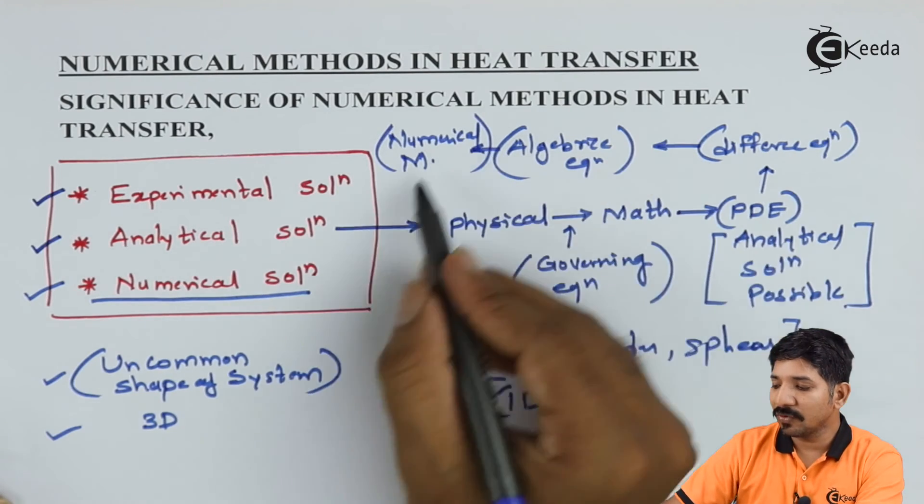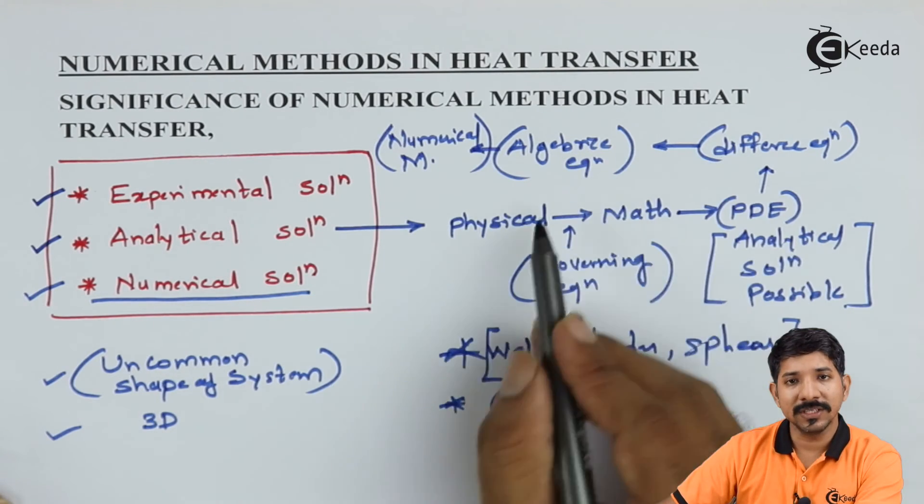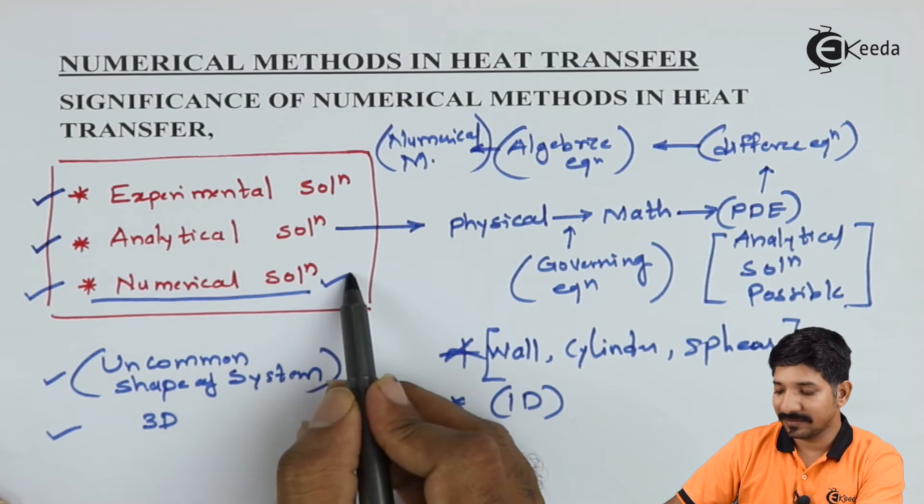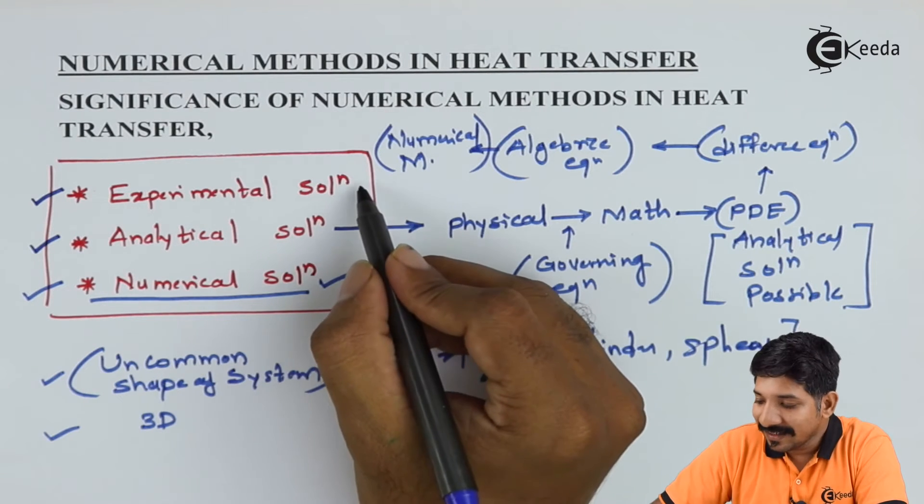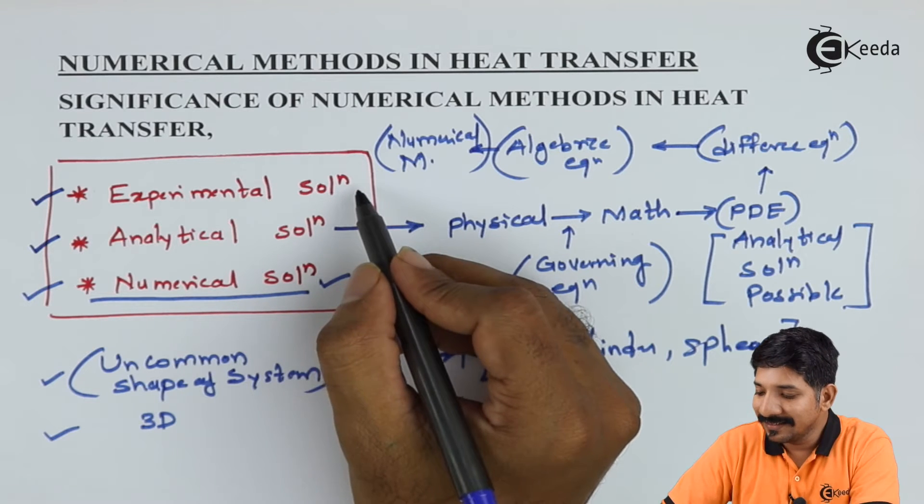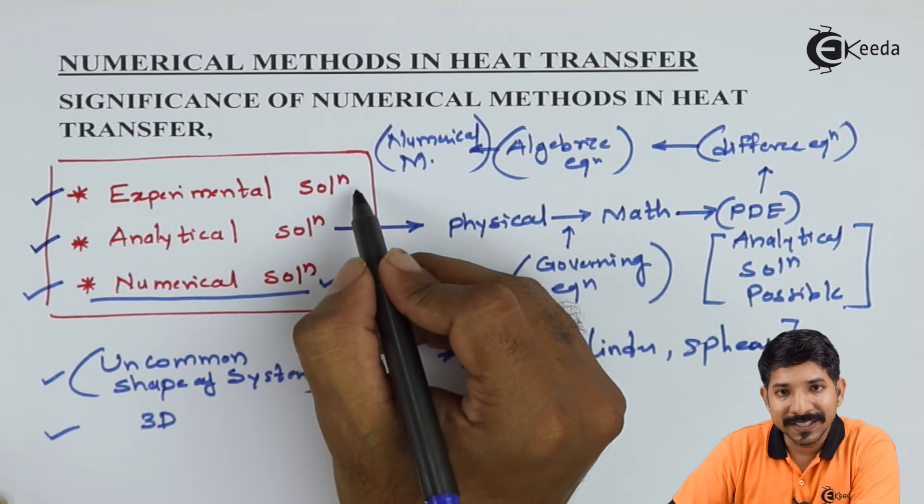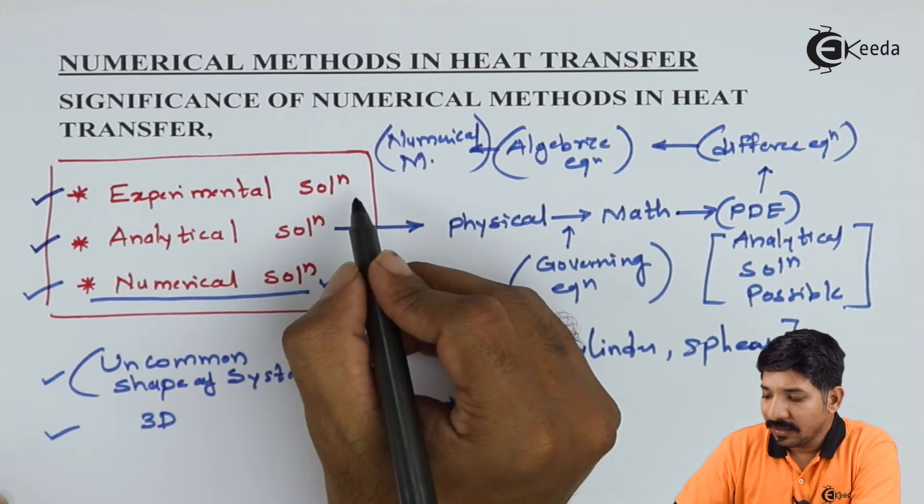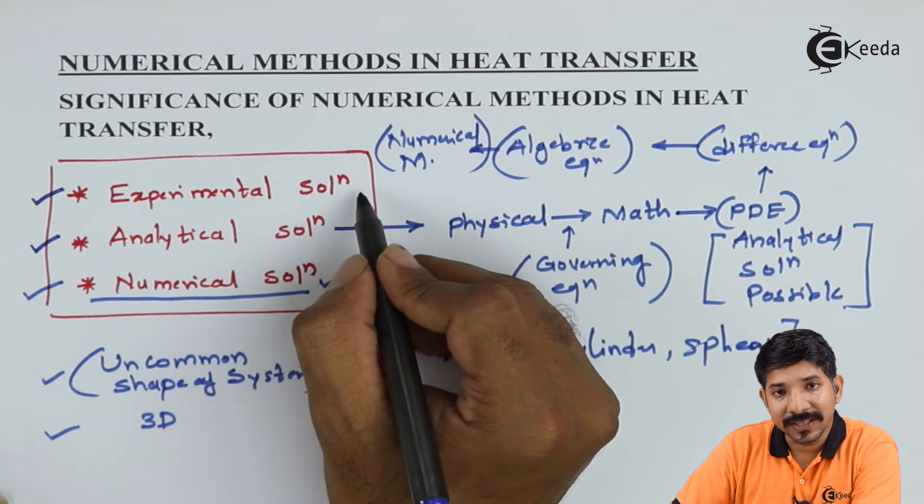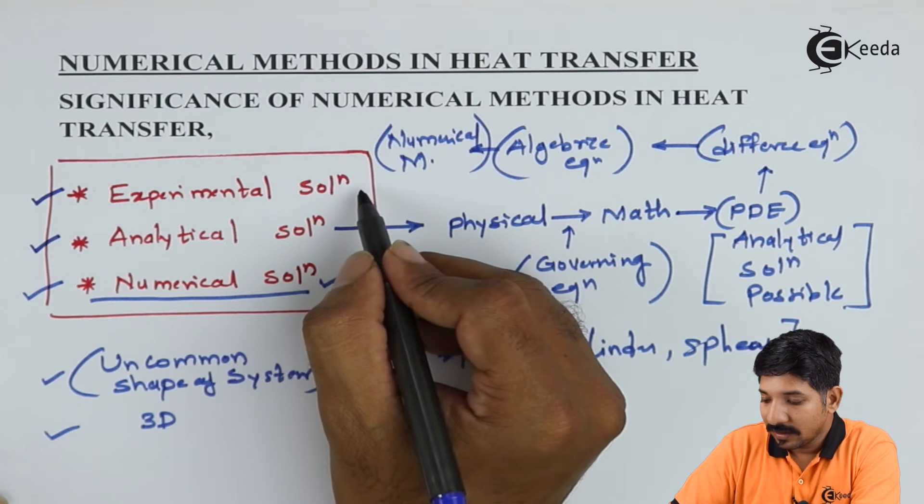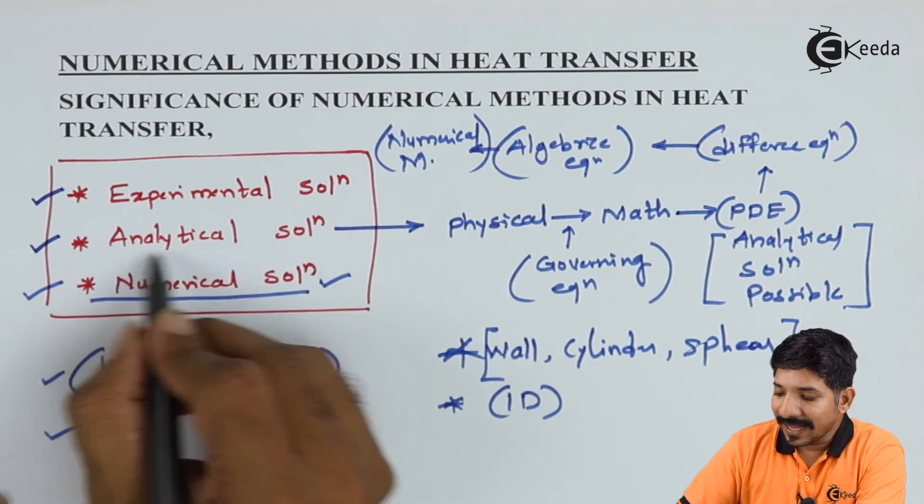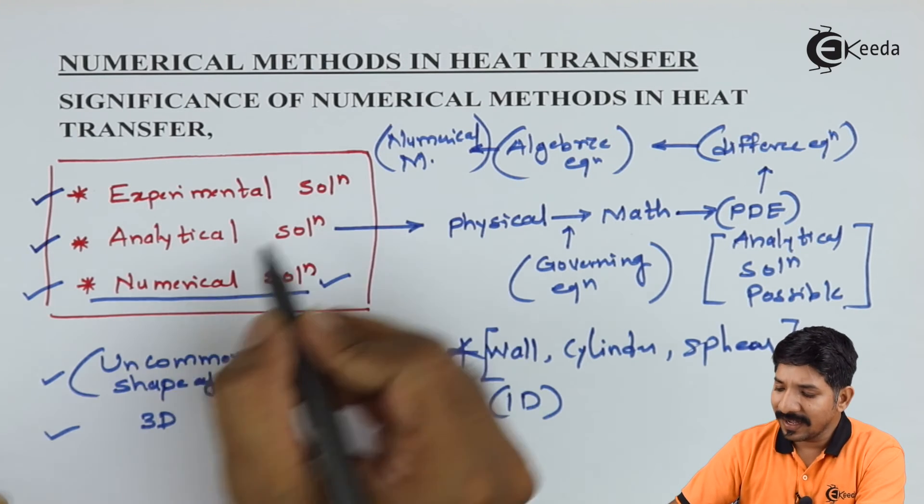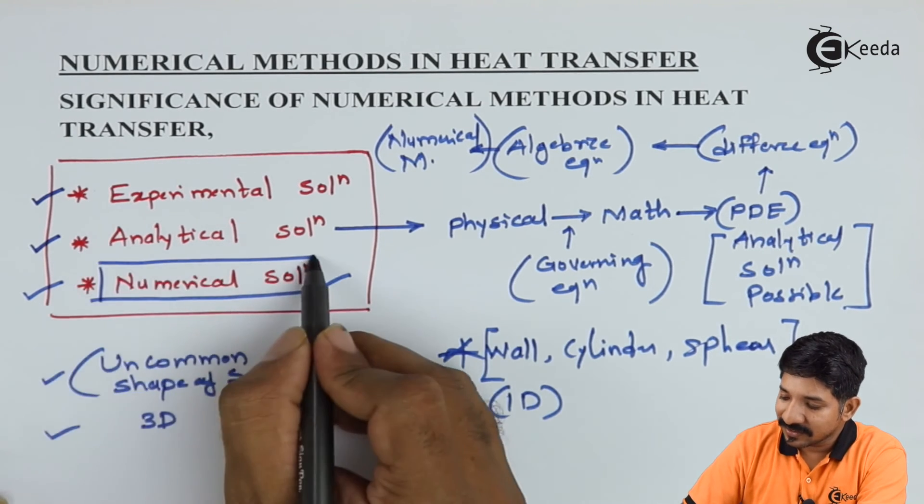This kind of process is what they are using for going for the solution using numerical methods. The experimental methods are available. But, these experimental methods will require a lot of budget because you need to go for the setup and we sometime can miss with the few of the variables. With the analytical method, as we have seen, it is not possible for entire geometry or entire cases.